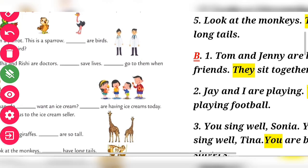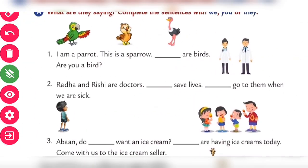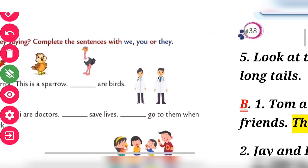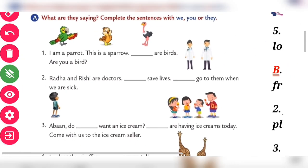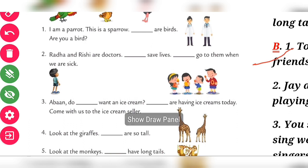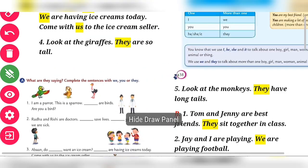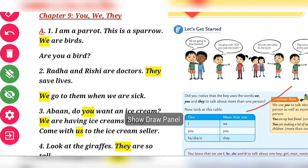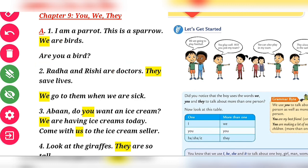Next page: Exercise A. Complete the sentences with 'we,' 'you,' and 'they.' Here is the first sentence: 'I am a parrot, this is a sparrow' — parrot and sparrow, there are two, so we use 'we.' The answer is 'We are birds.' Number two: asking a question, 'Are you a bird?'